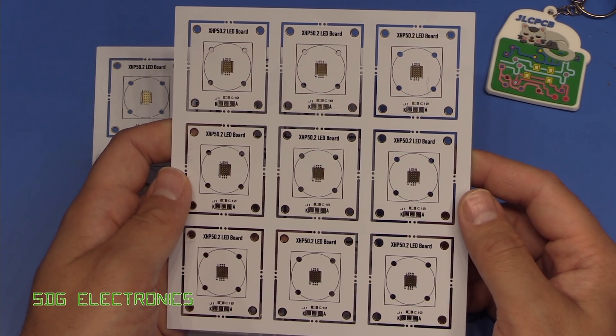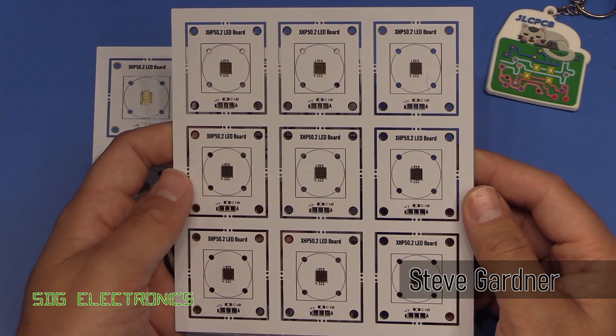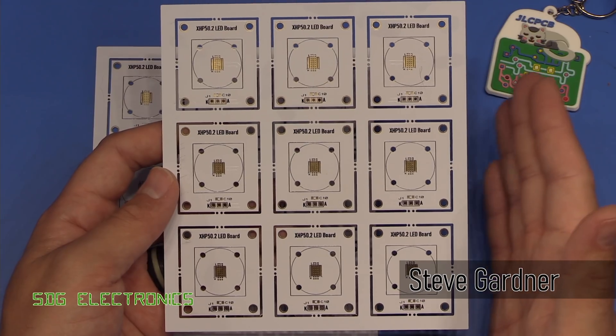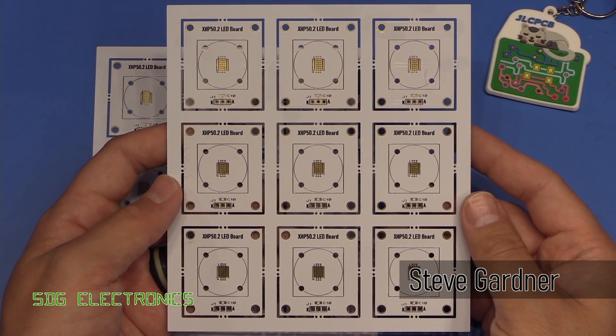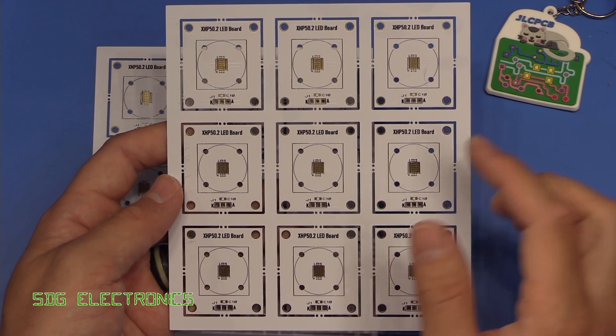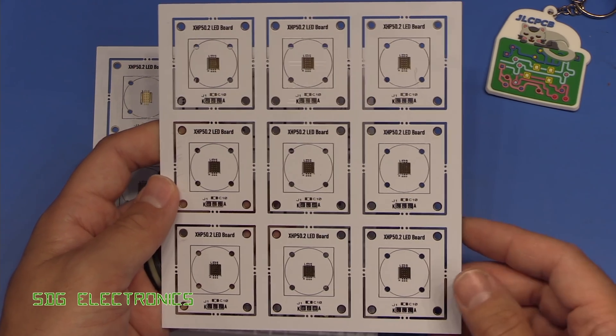Hi, today we're going to be looking at the LED boards for the LED ring light project that we had made at JLCPCB. So here they are, this is the panel exactly as we designed it in Proteus, and we've got nine individual LED boards per panel.